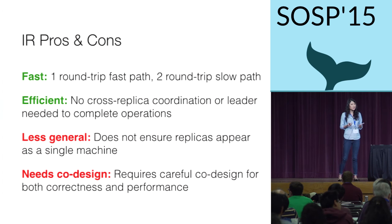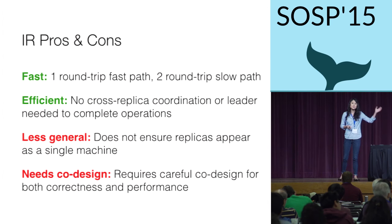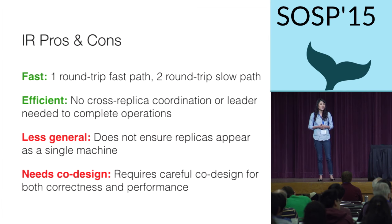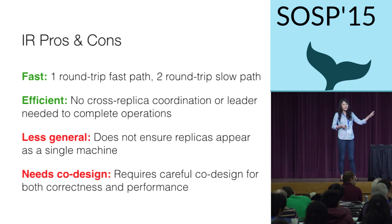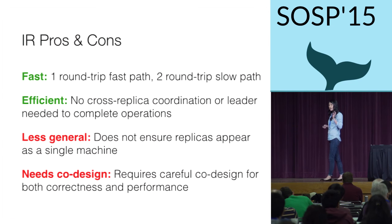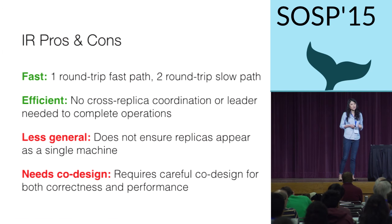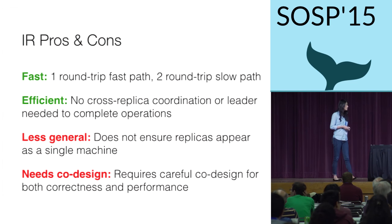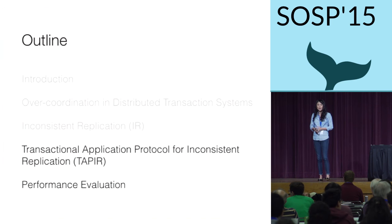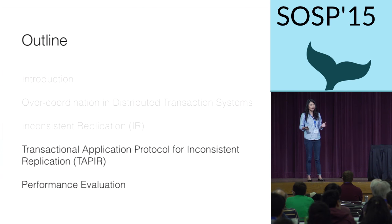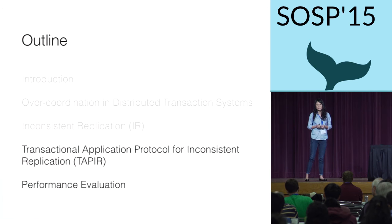Fortunately, we don't anticipate that end-user applications will have to deal with this complexity, because IR will always be integrated as part of a distributed system. My baby tapir app won't need to understand how IR works. But TAPIR, the Transactional Application Protocol for Inconsistent Replication, will have to be designed carefully to be used with IR.